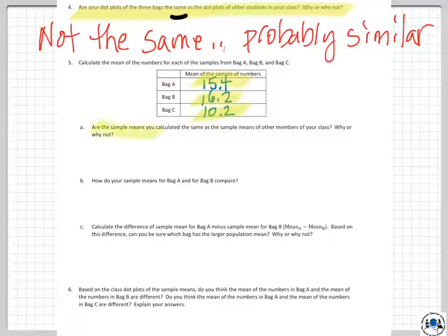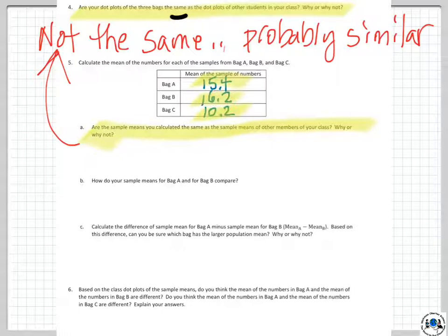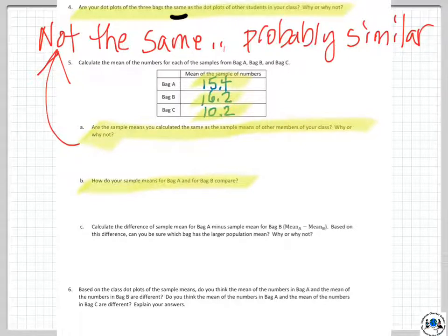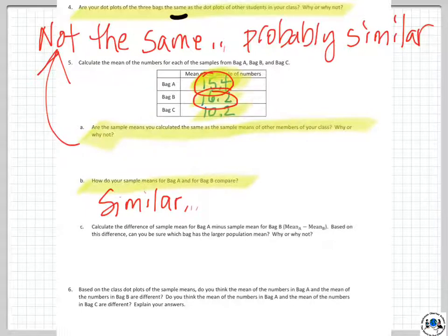Are the sample means you calculated the same as other members of your class? Of course not — same answer: not exactly the same, but probably similar, though maybe not. How do the sample means for bag A and bag B compare? Looking at 15.4 and 16.2 — very similar — similar enough to get us thinking that maybe the contents of those two bags are the same. Because two of these bags have the exact same contents in them, and one has different contents.